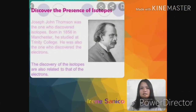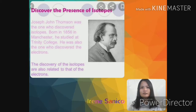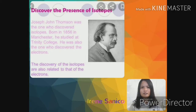Joseph John Thomson was the one who discovered isotopes. Born in 1856 in Manchester, he studied at Trinity College. He was also the one who discovered electrons. The discovery of isotopes is also related to that of the electrons.